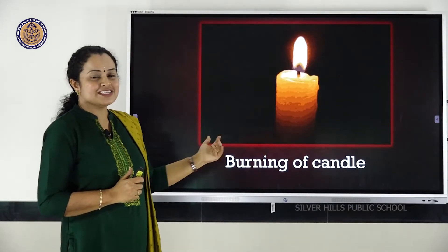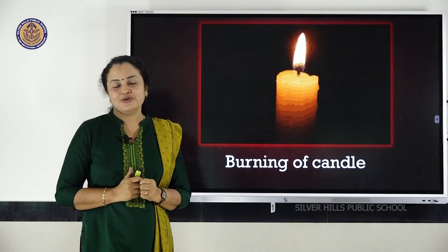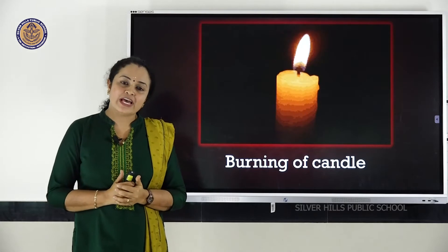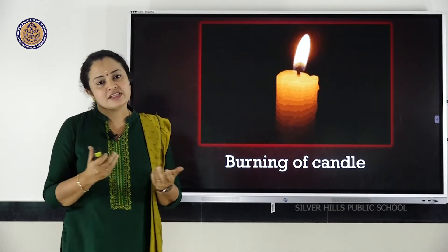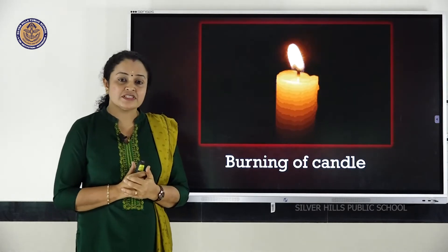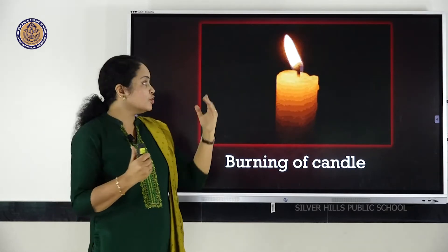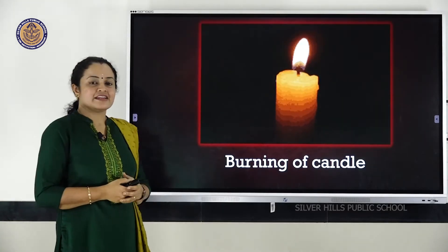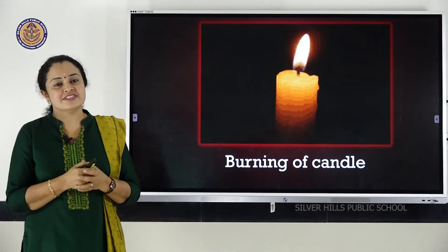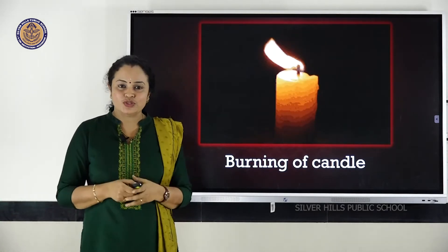Another good example is burning of the candle. In burning of the candle, two changes are happening simultaneously. Melting of the wax is happening — when the wax melts, it melts and changes its shape, but you will not get any new substance. But when the wick burns, it produces ash, smoke comes out, and light is produced — new substances form. So in burning of the candle, both physical and chemical changes are taking place.